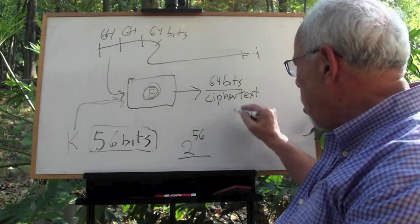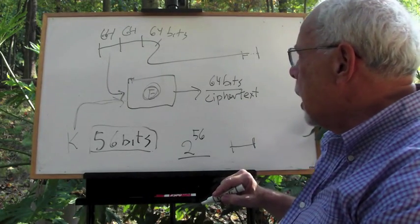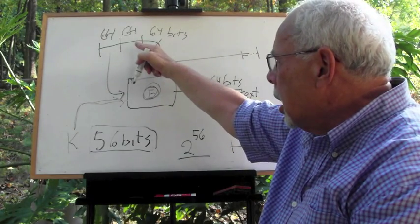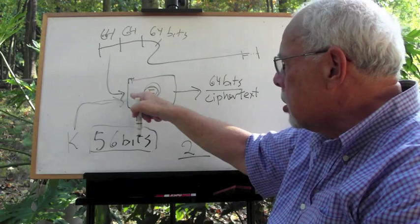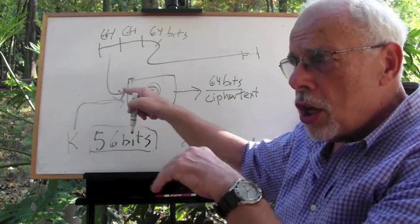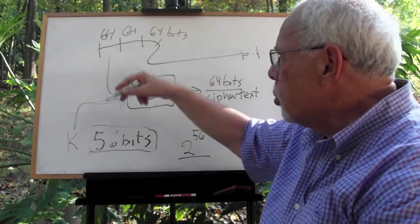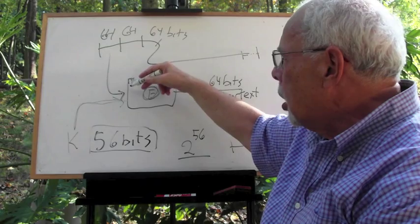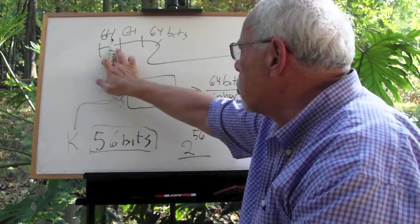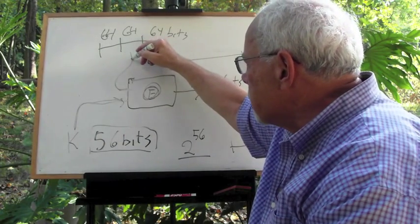You take this block and put it to the side. Then what do you do? You take the second block and feed it to the same box using the same key. You don't change the key from block to block; you use the same key. So the second block now goes in. We finish with the first one, and now we feed the second one.